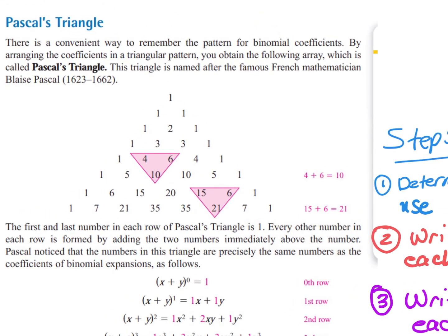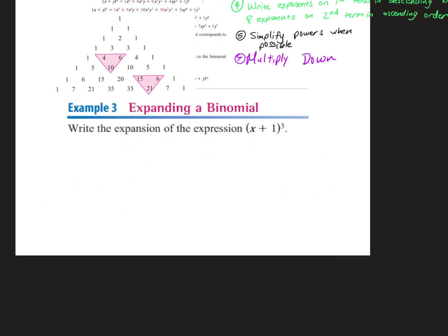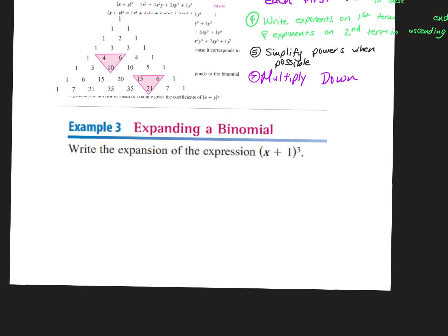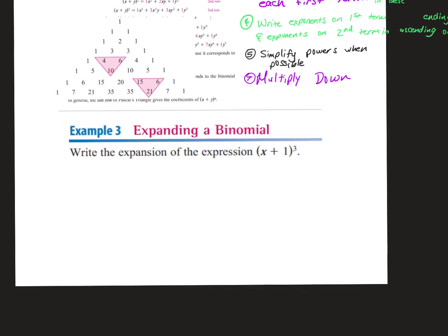Here is Pascal's triangle. You should put this next to every problem you do to expand. When talking about Pascal's triangle, this is considered the zero row, then the first row, second, third, fourth, fifth, sixth, seventh. The first thing you do is determine what row you're looking at — that is based upon the exponent.